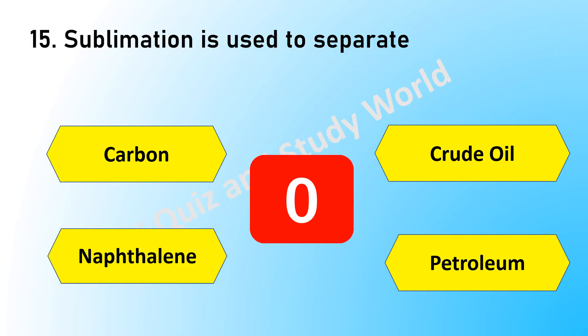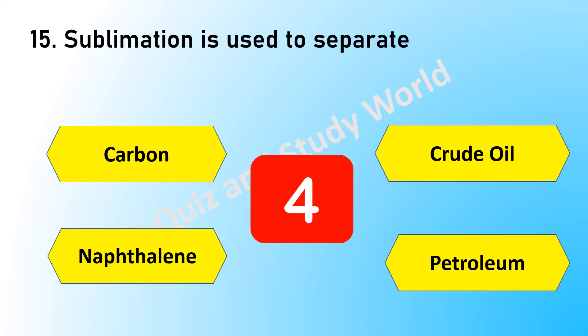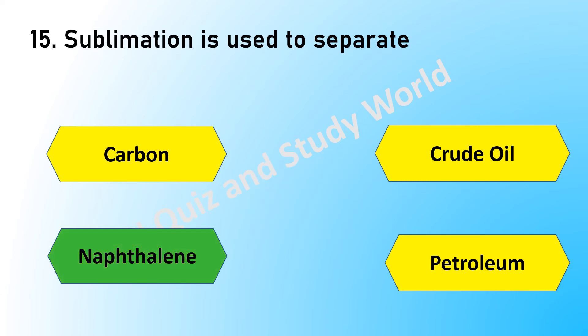Sublimation is used to separate — is it carbon, crude oil, naphthalene, or petroleum? The answer is naphthalene.